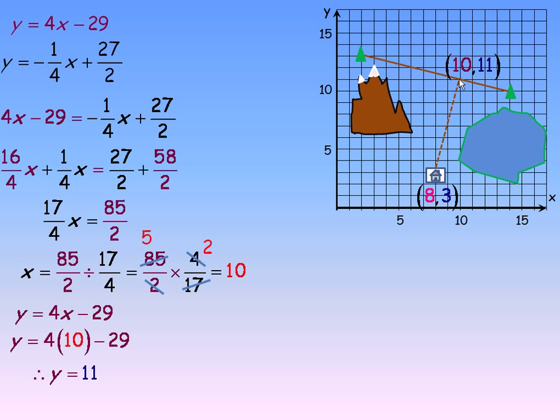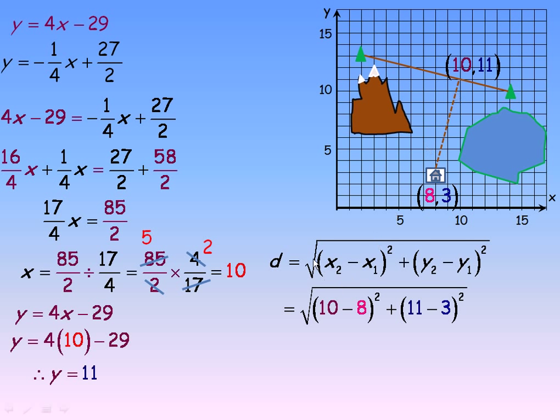So all we need to do now is find the distance from (8,3) up to the (10,11) point, and we'll use the distance formula for that. And so substituting the (8,3,10,11) numbers underneath the root inside the brackets here, x2 - x1 would be 10 - 8 squared, and y2 - y1 would be 11 - 3 squared here. Now 10 - 8 is 2 and 2 squared is 4, 11 - 3 is 8 and 8 squared is 64. So 64 and 4 add to 68.